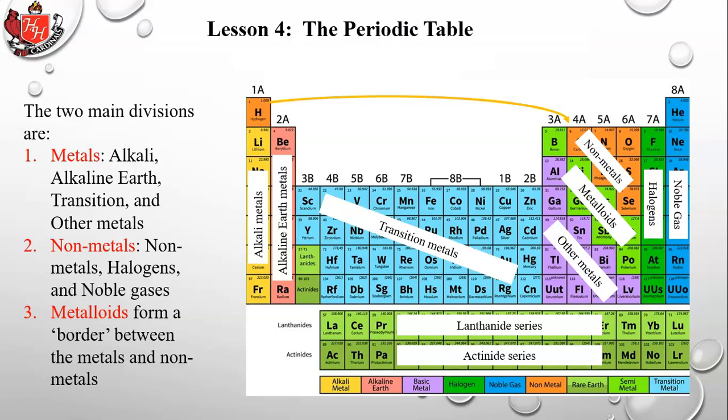Metalloids are the border between metals and non-metals, shown in light green, and are sometimes called semi-metals. Metals are the largest part of the periodic table, from the other metals section all the way to the alkali metals on the far left. Non-metals are a smaller group but very important because your body and living organisms are mainly made up of non-metals.